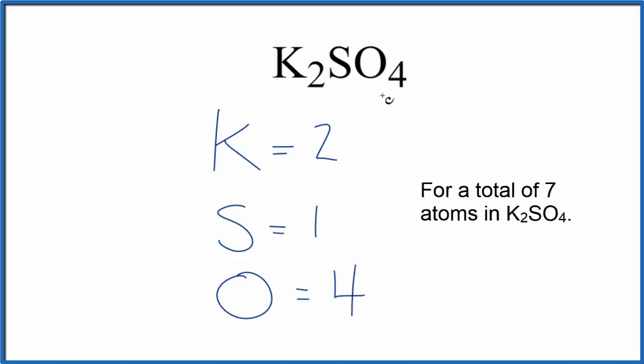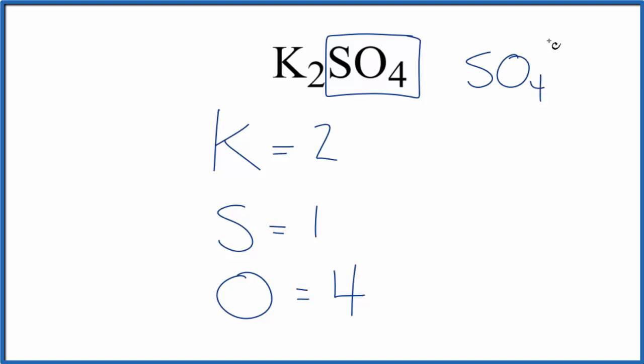You might also be asked how many sulfate ions there are in K2SO4. This is the sulfate ion. It's a good one to remember. It's SO4, and it has an ionic charge of two minus. So we have one sulfate ion here in our K2SO4.